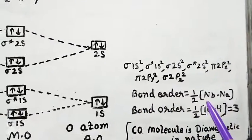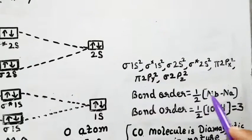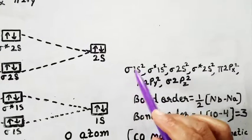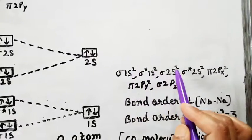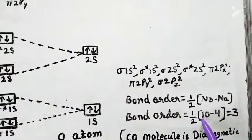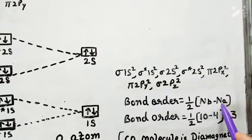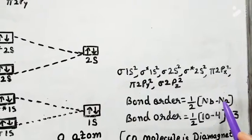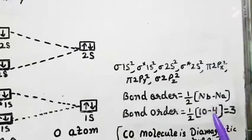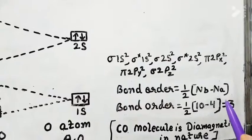Now we will calculate the bond order. Bond order equals 1/2 times (Nb minus Na), where Nb is the number of electrons in bonding orbitals and Na is the number in anti-bonding orbitals. Counting bonding orbital electrons (orbitals without the star sign): 2, 4, 6, 8, 10 — so Nb equals 10. Counting anti-bonding orbital electrons: 2, 4 — so Na equals 4. The bond order is 1/2 × (10 − 4) = 3.